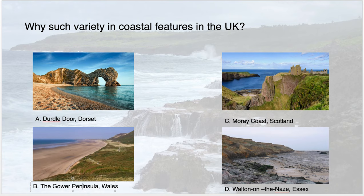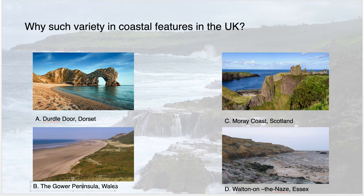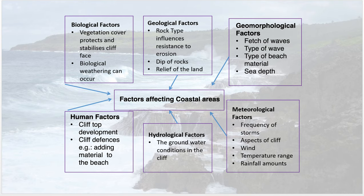Bottom right in Essex, Walton-on-the-Naze has a sandy cliff with a lot of slumping. On the east coast, where the North Sea is quite rough, there are rocks collapsed from the cliff above and terraces moving down from the top due to weathering processes we'll cover in a later lesson. Top right, the Moray Coast in Scotland is quite rocky with headlands and bays. So in the UK we've got spits, tombolos, coves, headlands, stacks, stumps — all those lovely features you enjoyed at GCSE Geography.